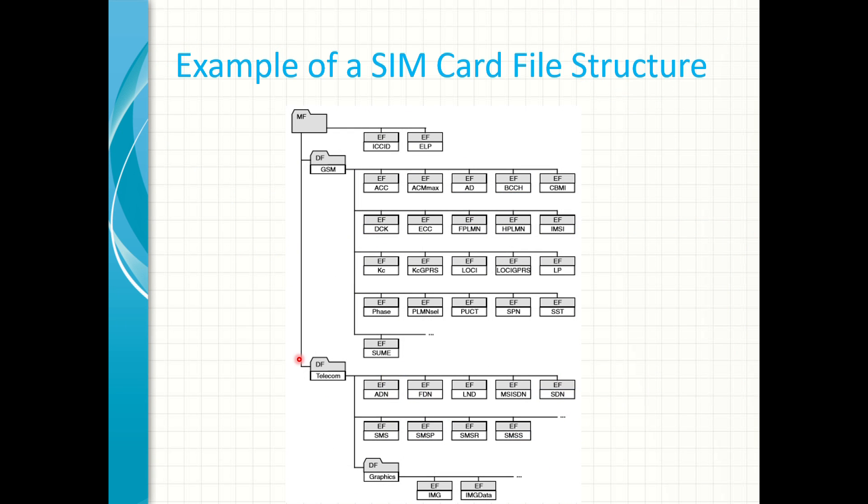Here's another example, but this time it is for a SIM card. You can see here that there are two elementary files directly under the master folder. In this case they are used for ICC ID and ELP respectively. The sim card also has two applications: the GSM and the Telecom application. Each application has its various elementary files used for different tasks in the application.